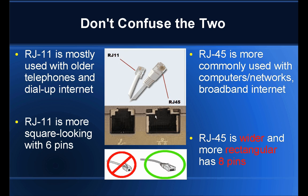The RJ11 is mostly used with older telephones like dial-up internet and old dial-up modems, while the RJ45 is more commonly used with broadband internet, computers, and networking. The RJ45 is wider, rectangular, and has eight pins.